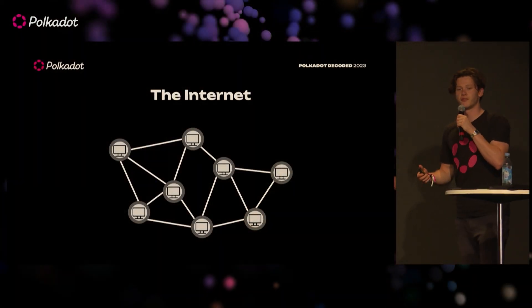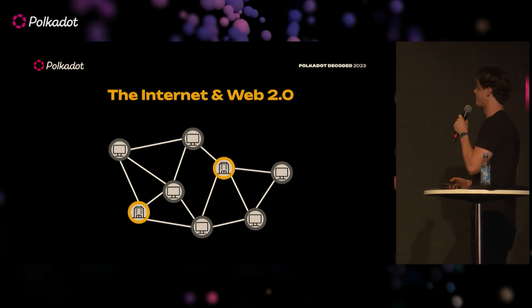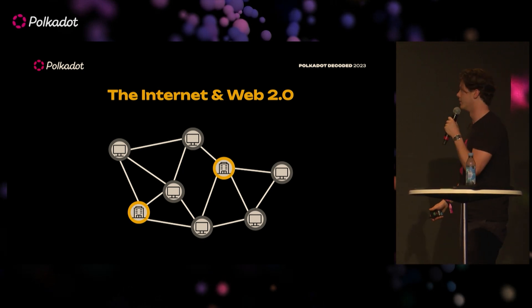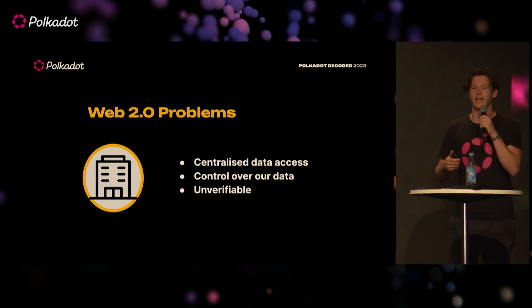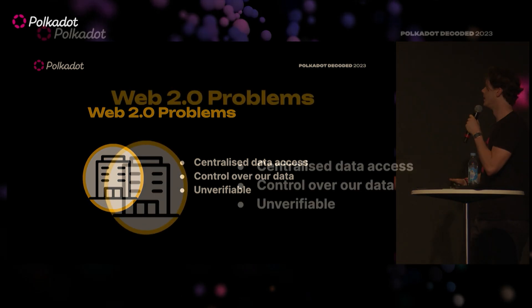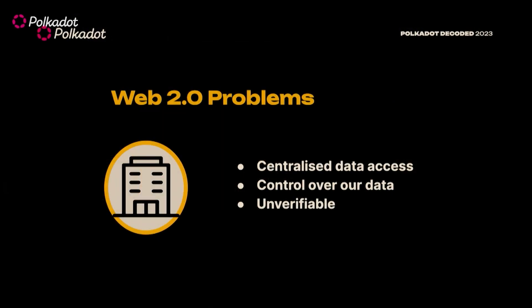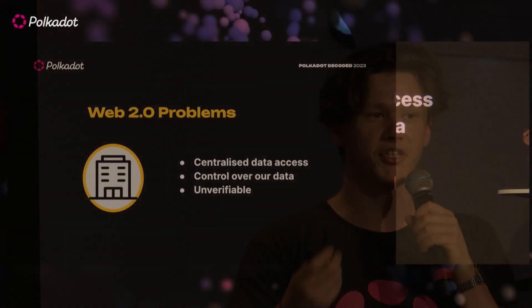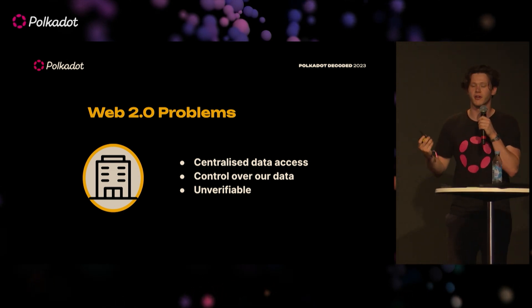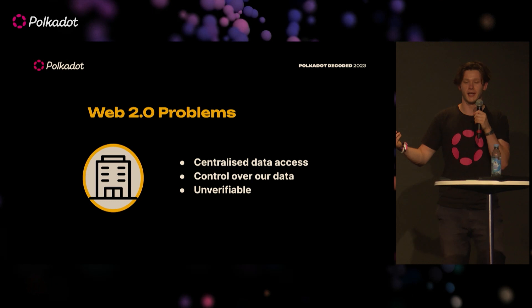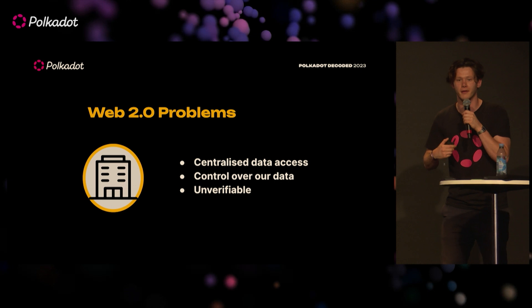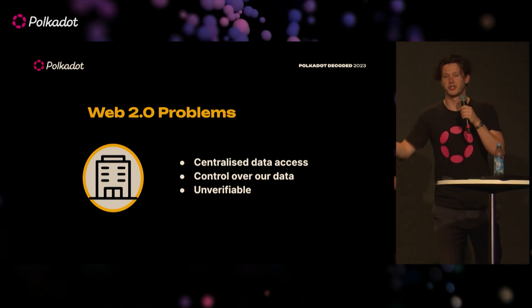The internet, very simply put, is just a bunch of computers exchanging information with each other. The current web, also known as Web 2.0, has data owned solely by big companies. The problem is they are the only ones with access and control over all this data. If they are shut down or stop running, we lose access to the data — or even worse, it gets lost. In addition, all our interactions with these companies are unverifiable. With the latest advancements in AI, it's important to know whether a photo on my social media was actually posted by my friend, and not by a malicious person or AI.